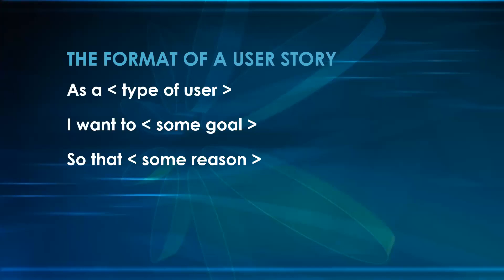Having said all that about a user story, there is a specific format. The format is: As a [type of user], I want to [goal], so that [reason/value]. That's the basic format — you describe the type of user, state the goal that needs to be achieved, and give the reason why, or the value that will be added by achieving that goal.